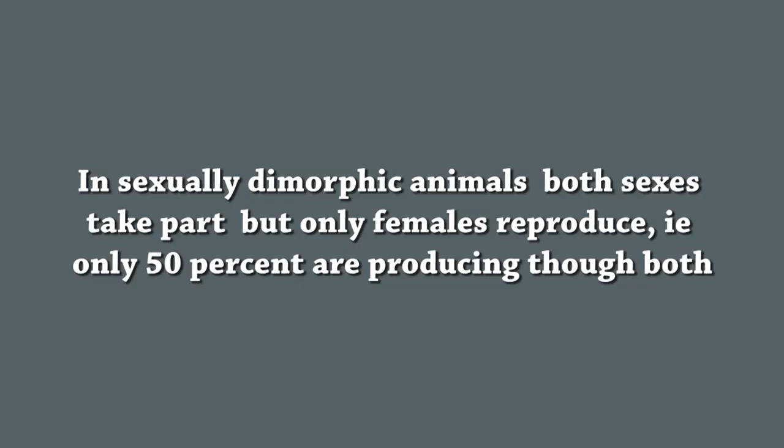Nature is so wonderful. In hermaphrodites, all individuals reproduce. In sexually dimorphic animals, both sexes take part, but only females reproduce — that is, only 50 percent are producing, though both sexes are taking part in reproduction.